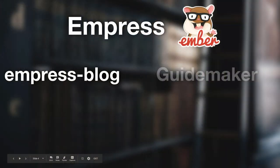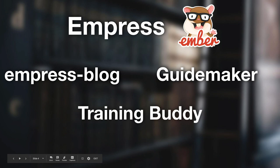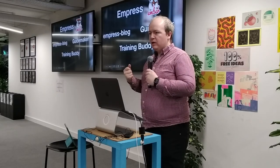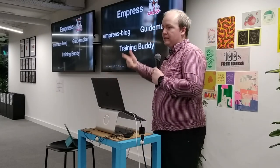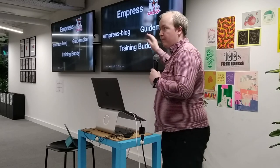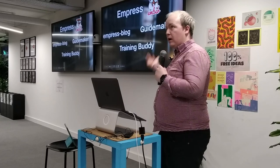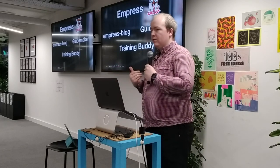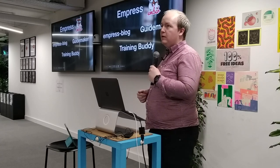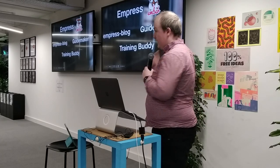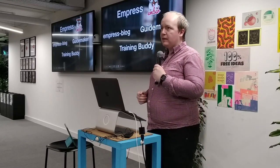Gatsby is very good at giving you tools that you use to build your own site. But what Empress is evolving to be is a series of products that are things in their own right. It's less about installing Empress and building a static site. You instead build one of these: Empress Blog, which does what it says on the tin, is a blog system. GuideMaker is a documentation site currently being used for the Ember documentation. And TrainingBuddy was literally launched yesterday — it's a sidecar app for doing workshops and training.